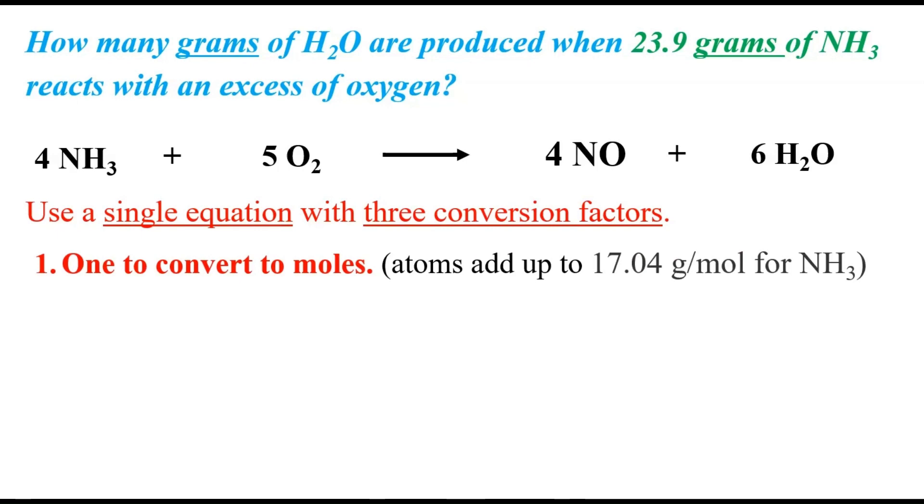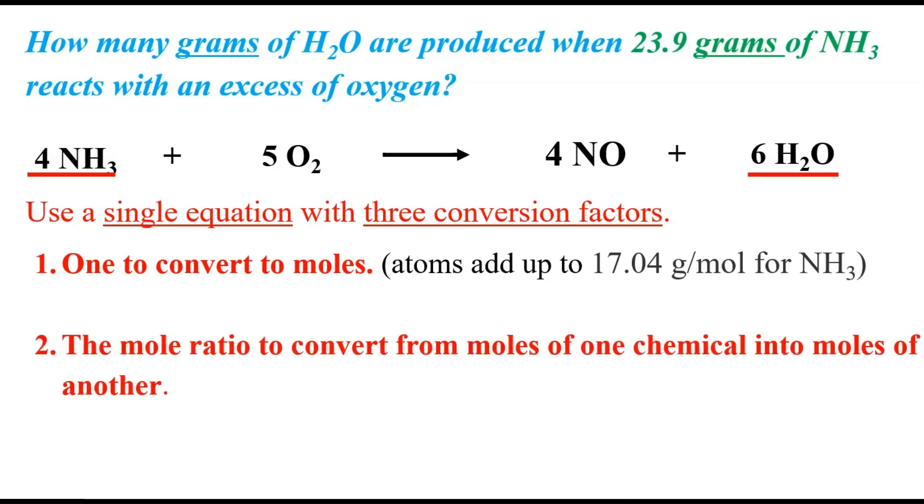The first one is just to convert from grams to moles, and when we work the problem out and we come across ammonia, the conversion factor is going to be 17.04 grams per mole of ammonia. The second conversion factor we're going to need is the mole ratio to convert from the moles of one reactant or product into the moles of another reactant or product in a problem like this. And then lastly, we're going to need one to convert back to grams, which adds up to, for water, in this case, it's 18.02 grams per mole.